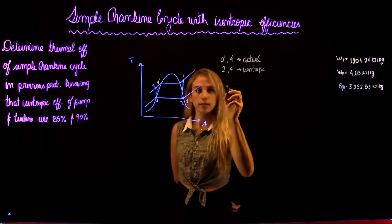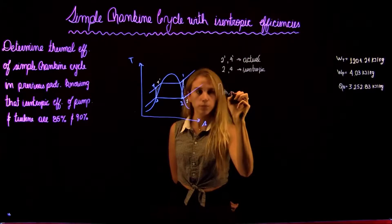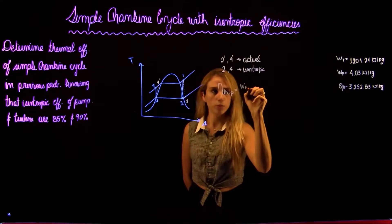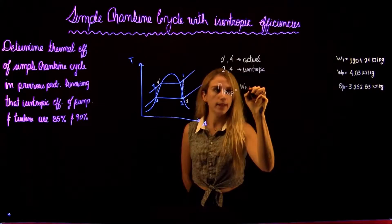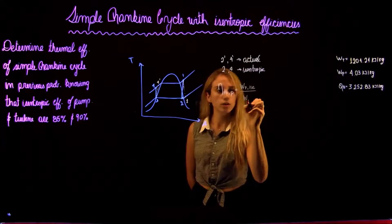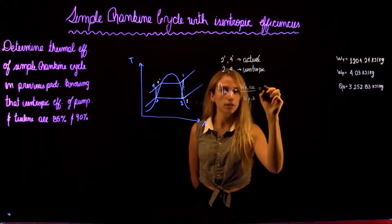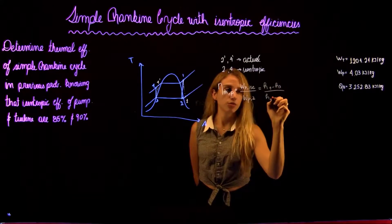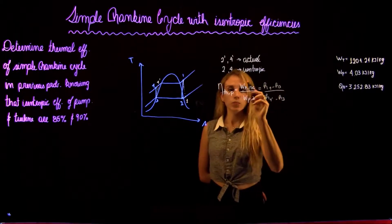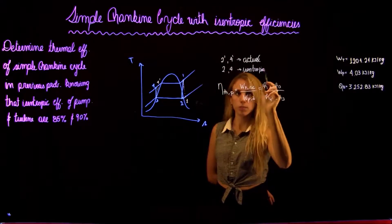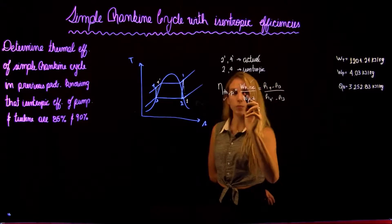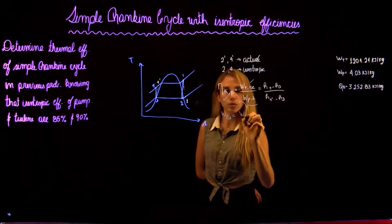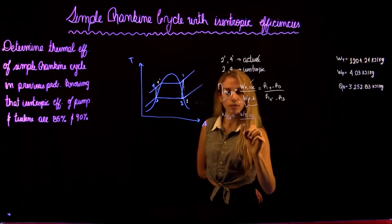So if we know the isentropic efficiencies, for example, the isentropic efficiency of the pump, we know it's going to be equal to the isentropic pump work over the actual pump work. This is also going to be equal to (H4 - H3) over (H4' - H3). By knowing this, we already have calculated the isentropic pump work, and we are given the isentropic efficiency of the pump, so we can calculate the actual work of the pump.